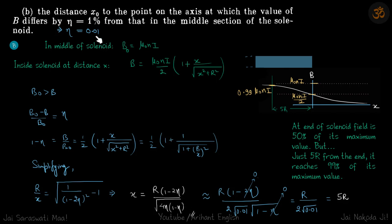As eta is very low, just 0.01, we can neglect this term and this term also. We get x as r by 2 root 0.01, which is 5r.